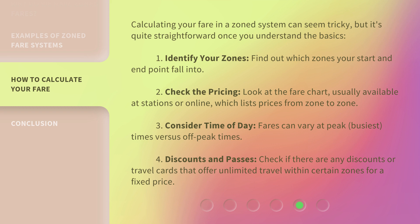Three: consider the time of day — fares can vary at peak, or busiest, times versus off-peak times. Four: discounts and passes — check if there are any discounts or travel cards that offer unlimited travel within certain zones for a fixed price.